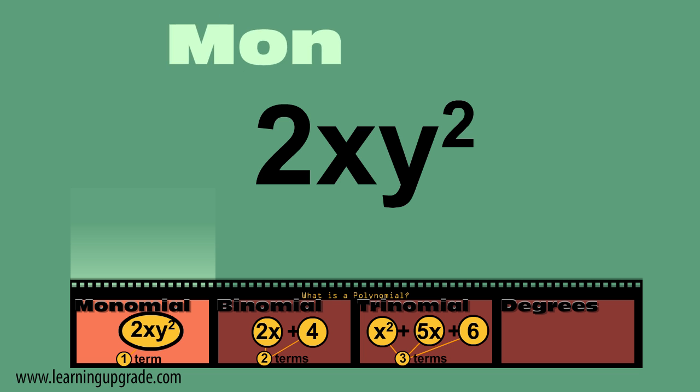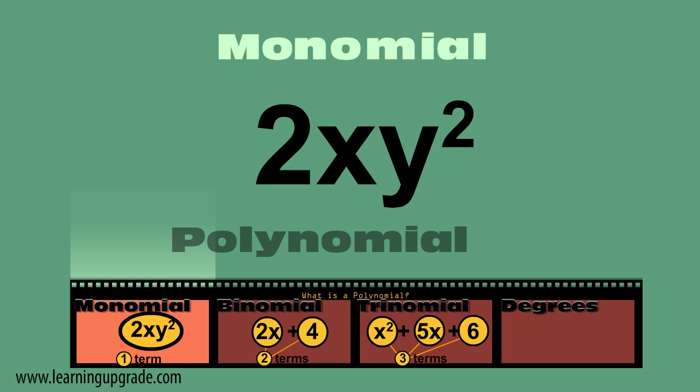What's a monomial? It's a polynomial with one term. 2xy squared, one term. A monomial.